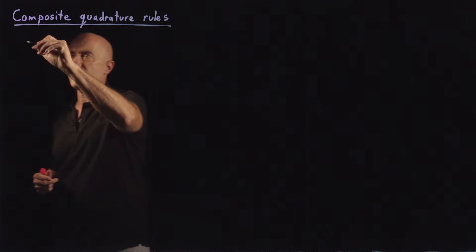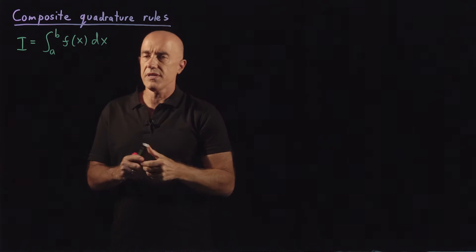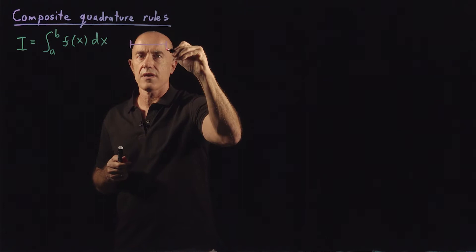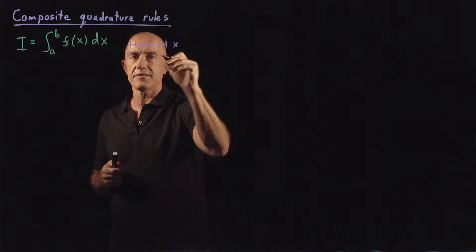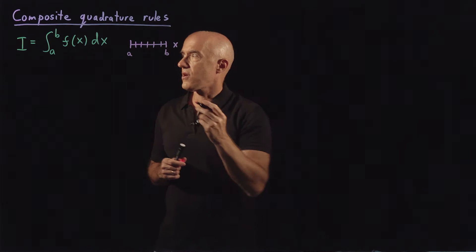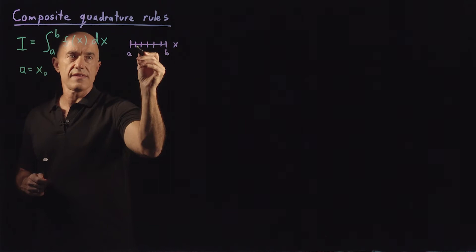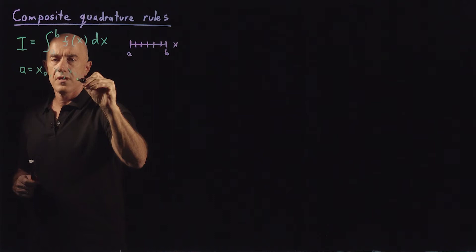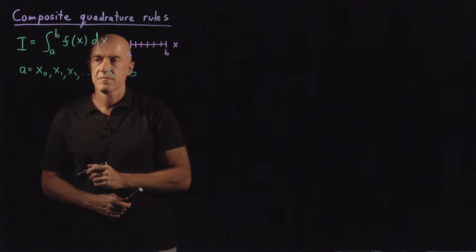The integral we want to do is the integral from a to b of f of x dx. We basically are splitting up our interval. So this is our x interval — we're going to break it up into pieces. We call the left endpoint a, which is x-naught, and the right endpoint b, which is x-sub-n. The intermediate points are x₁, x₂, and so on until we get to xₙ.